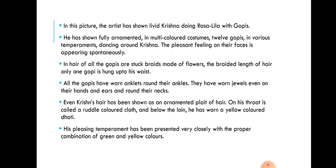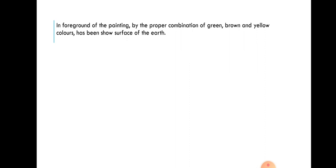You can see in the painting that Krishna has an ornamented plate of hair, meaning he tied his hair with some kind of ornament on his head. On his throat, he is wearing a ruddle colored cloth, and below the waist — lawn means our waist — he is wearing a yellow colored dhoti. His pleasant temperament has been presented very closely with the proper combination of green and yellow colors shown on the surface of the earth in the foreground of the painting.